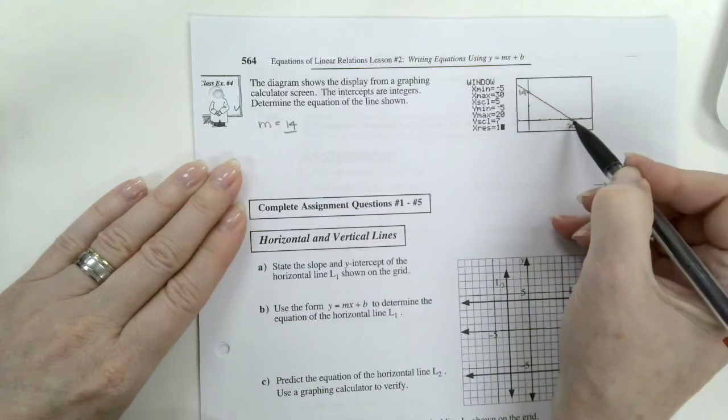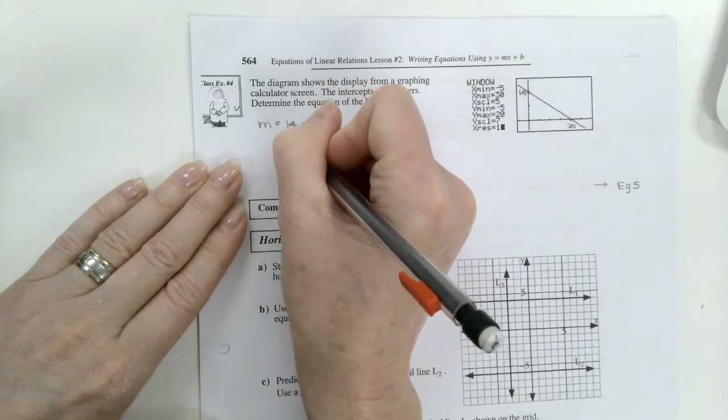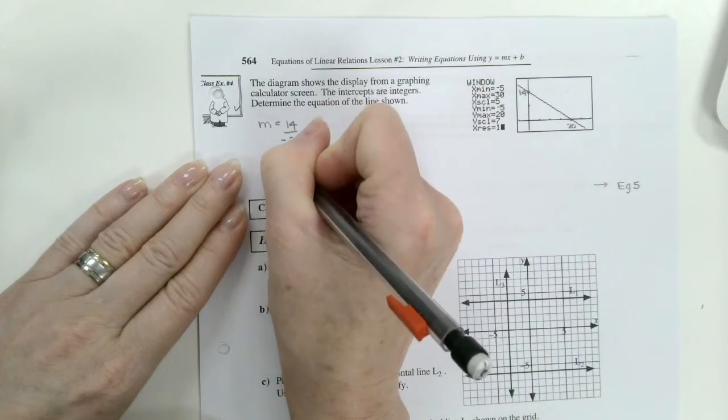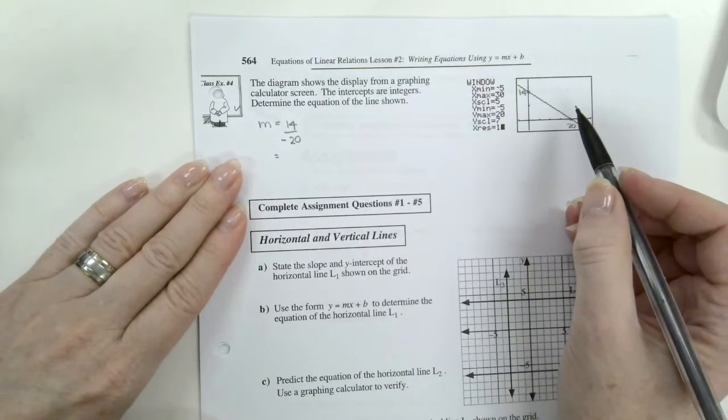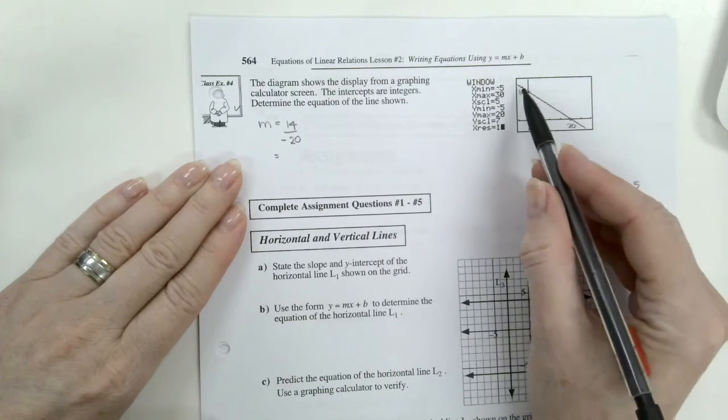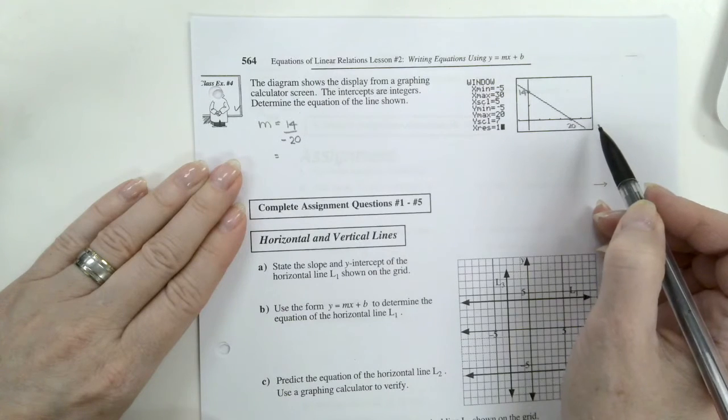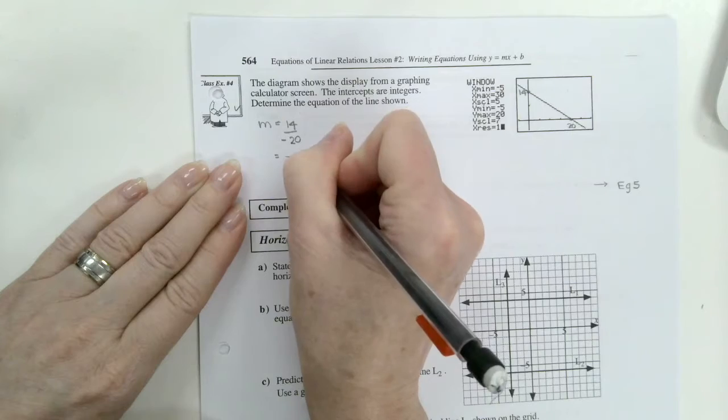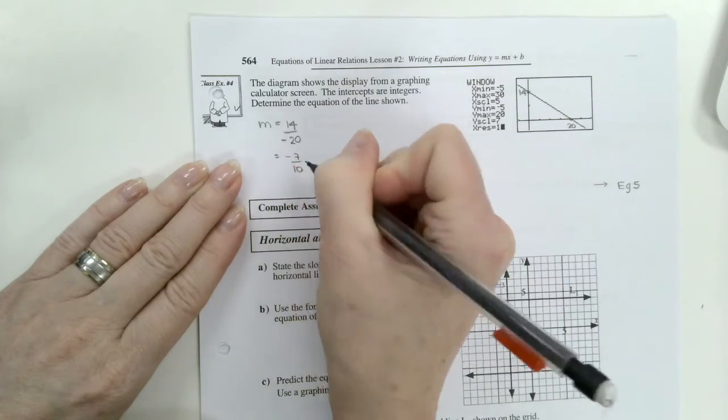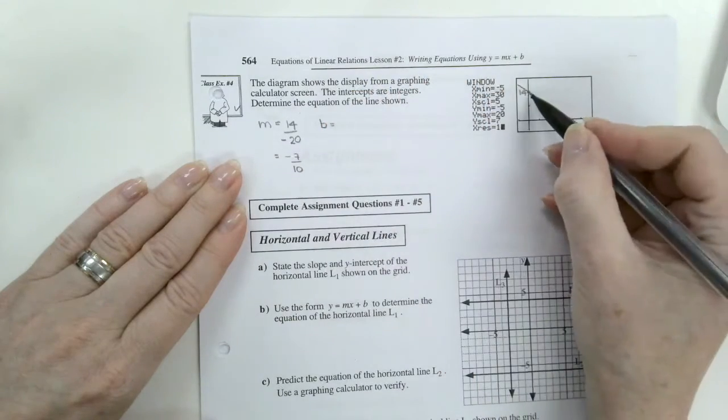And notice if I keep going, I'll be going left. Negative 20. And that's how I will get my negatives in the proper spot. Instead of just having to look at it and know that it will be a negative slope. And now we'll reduce. So this will be negative 7 tenths. I'll just move that negative to the top. And then b is going to be my y-intercept, which is 14.